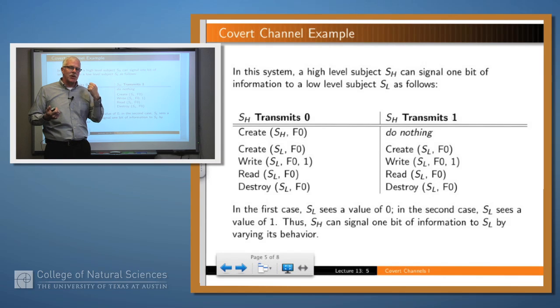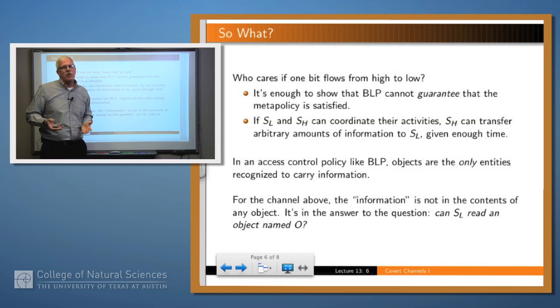So what's the upshot of this? On the left-hand side, the low-level subject gets a 0 back. On the right-hand side, he gets a 1 back. Depending upon what the high-level subject has done, either creating the object or not, the low-level subject sees different values. And so I would claim that by using this mechanism, the high-level subject was able to signal one bit of information to the low-level subject. It's a proof of concept that even though our simple system satisfies the Bell and LaPadula rules, nevertheless, there's a flow of information from high down to low. And that shows that there must be something wrong.